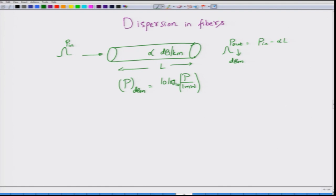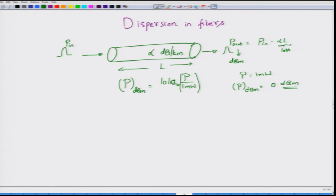All powers in optical communication systems are typically measured in dBm scale. For example, if the power happens to be 1 milliwatt, then in terms of dBm scale, the same power will be expressed as 0 dBm. Since alpha is expressed as dB per kilometer and we have propagated pulses over a distance of L kilometers, the total loss is simply alpha times L, in units of dB.